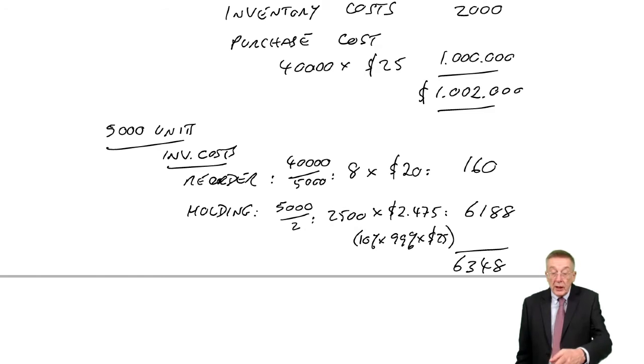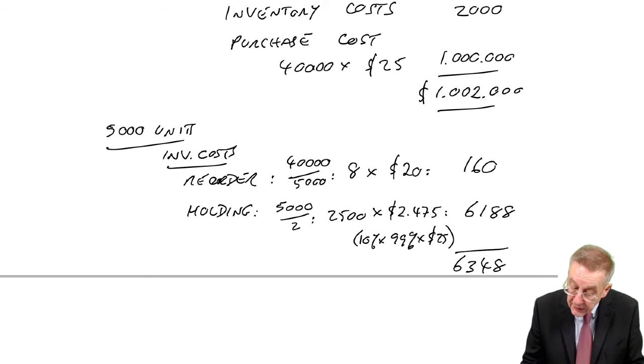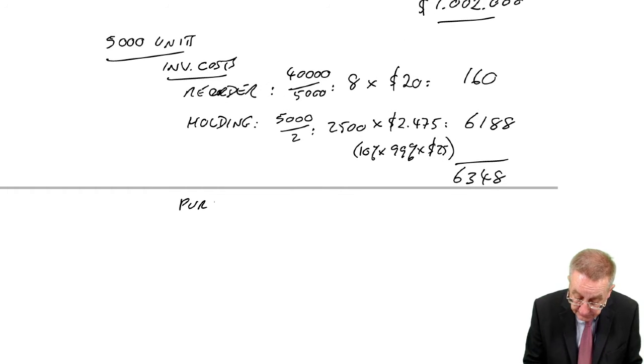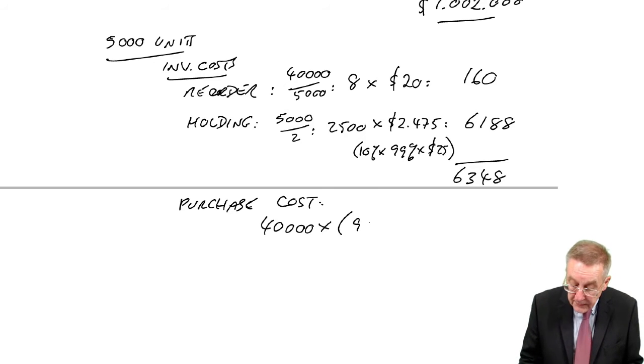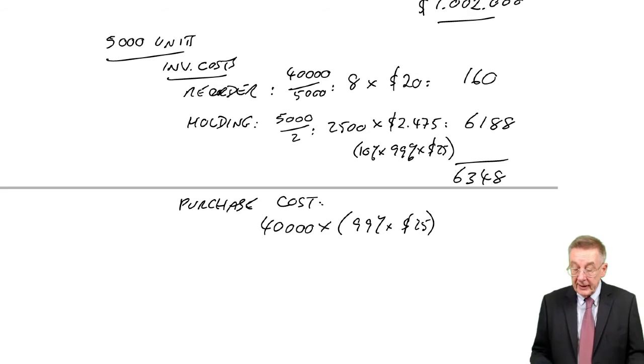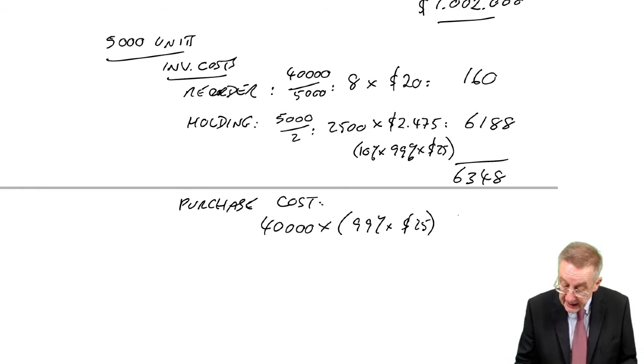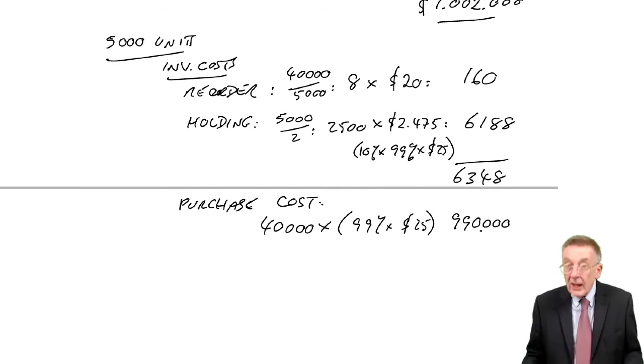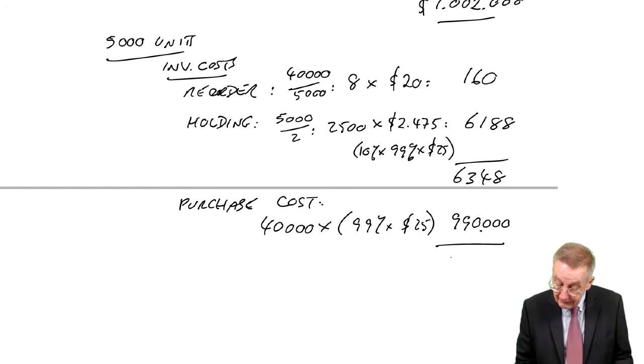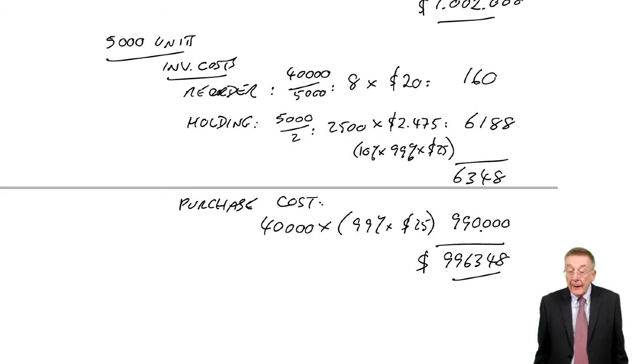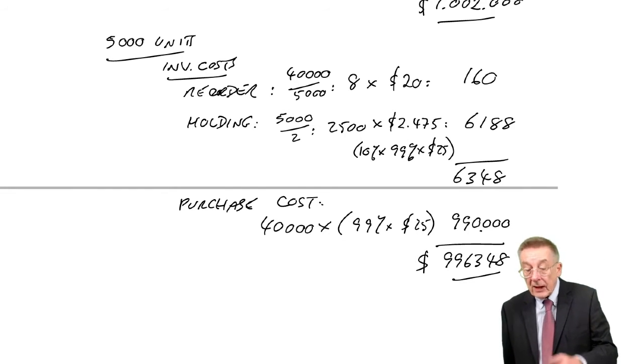However, it could be worth paying that extra inventory cost because over the year, the purchase cost is going to be lower. Still buying 40,000 units, but with a 1% discount, we're only paying 99% of 25. So the purchase cost will be $990,000. The total is $996,348. In total, it is cheaper. It would be better to order 5,000 each time than to stick with 800.